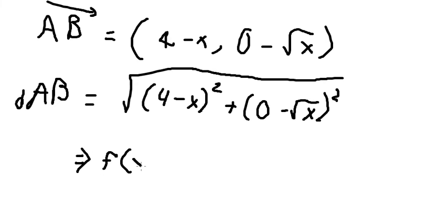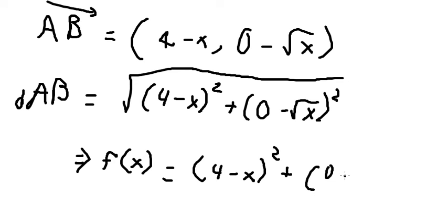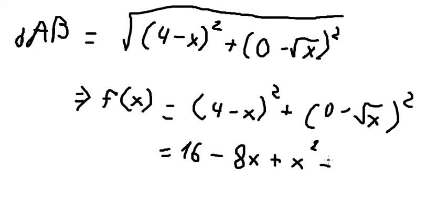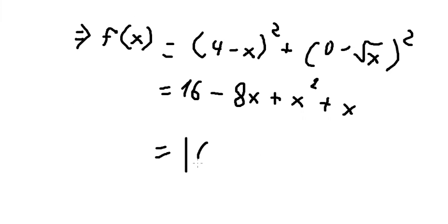I will set up F(S) equal to this expression. We expand to get 16 minus 8S plus S squared, and the second term simplifies to positive S. So F(S) equals 16 minus 7S plus S squared.